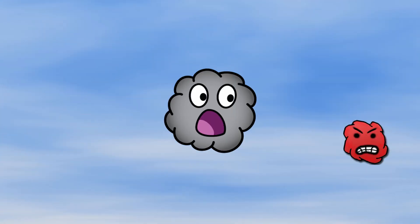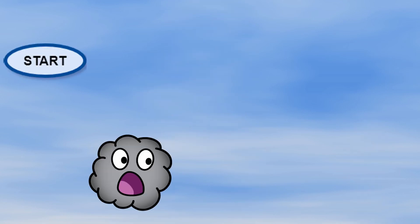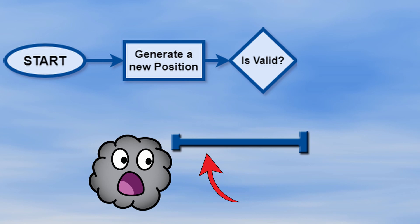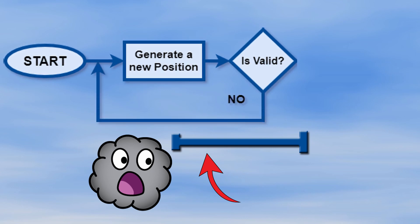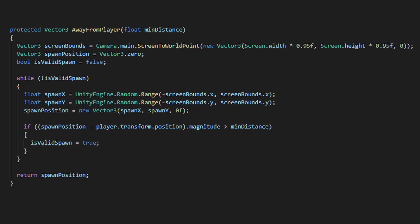The next issue was to make the enemies not spawn too close to the player, as in some cases you would not have enough time to move away, and that would be kind of frustrating. The current approach is to generate a random position inside a loop and check if it's far enough from the player. If it's too close, the loop continues; otherwise the position is returned and used to instantiate the enemy. I take the screen boundaries in worldspace and reduce it by 5% so that the enemy spawns inside the screen. The Camera has a ScreenToWorldPoint method that does the conversion for you, pretty much similarly to the screen clamp I just mentioned earlier.